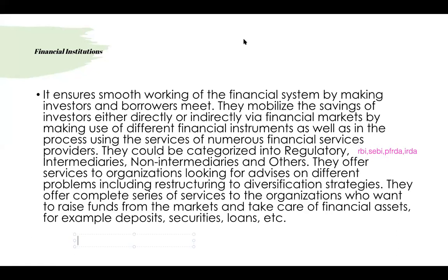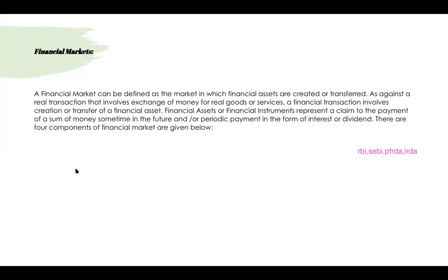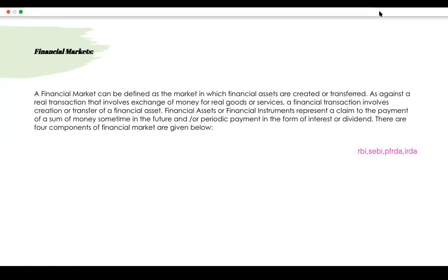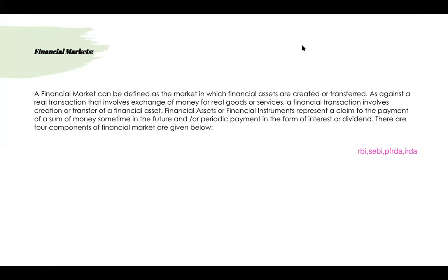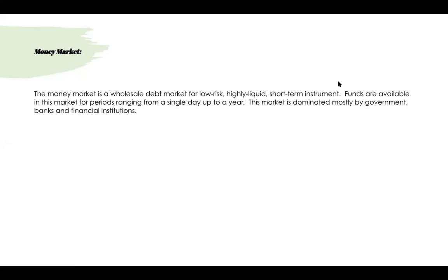Financial markets are markets where financial assets are bought and sold. What are financial assets? They are financial instruments. A building is a physical asset whereas an equity share is a financial asset — physical assets can only be used as machinery or a building, whereas financial assets are intangible claims.